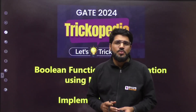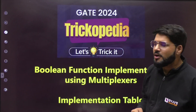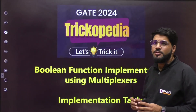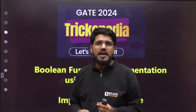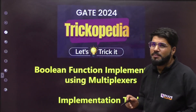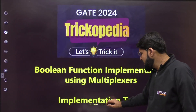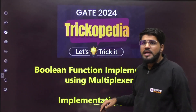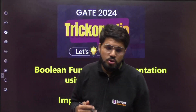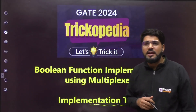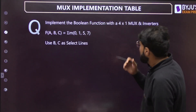Hello students, welcome to the next video of Trickopedia. In this video I am going to talk about Boolean function implementation using multiplexers — a very important area for almost all competitive examinations. We are going to implement it not by a conventional method, but through the implementation table. What is the implementation table and what mistakes students usually commit — all that I will try to address in this short video.